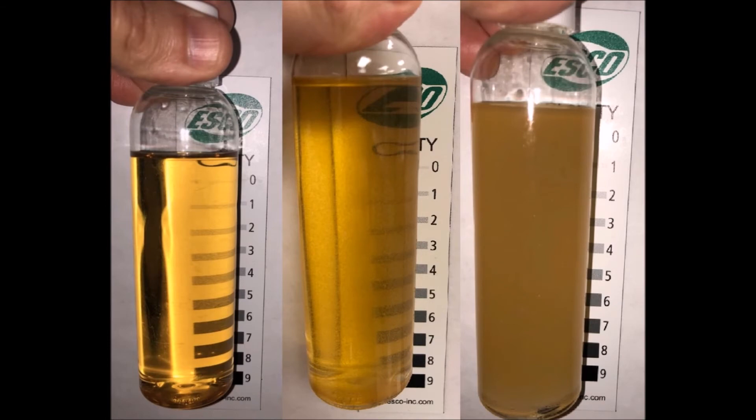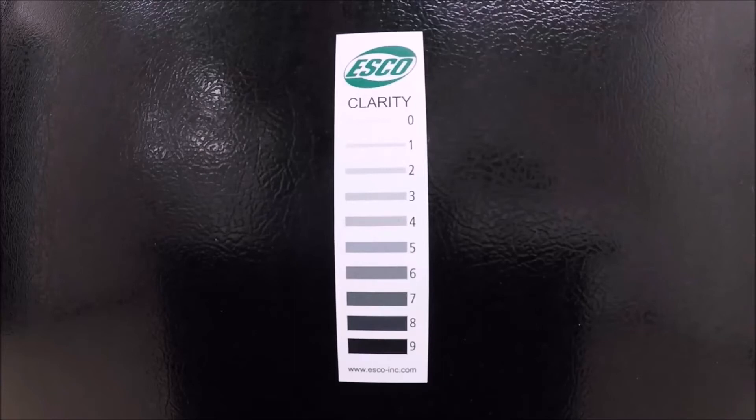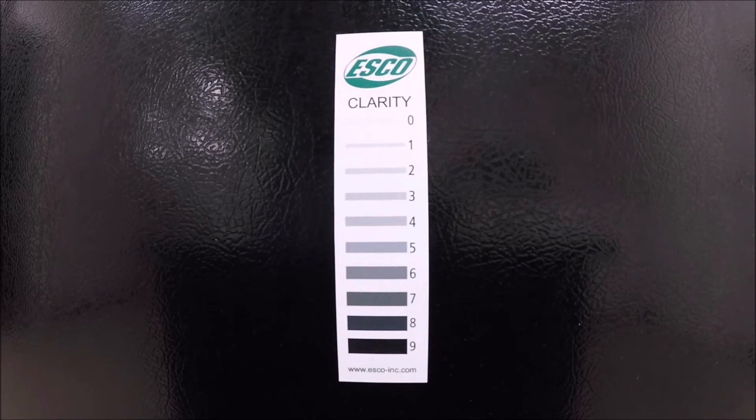The ESCO clarity magnet has 10 lines, each getting progressively darker and thicker. As the oil's clarity diminishes, less of these lines will be visible when looking through the oil.